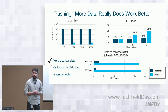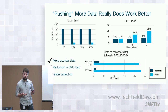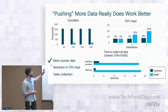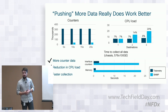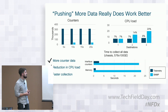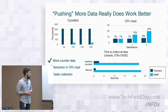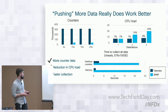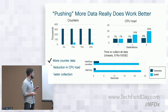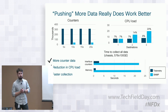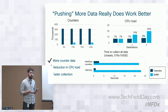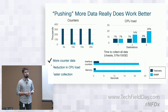If we compare streaming telemetry to SNMP, we can observe significant improvement across various aspects. We can stream and push more counters and do it much faster. We can add more destinations or more receivers, and CPU load doesn't increase significantly. The amount of counters we can share without heavy memory consumption is improved significantly over SNMP — more counter data, reduction in CPU load due to the architectural approach in the OS, and faster collections.